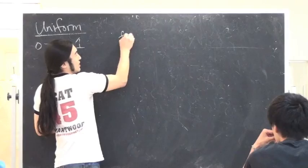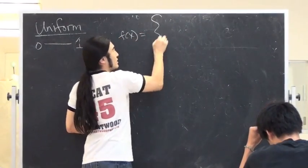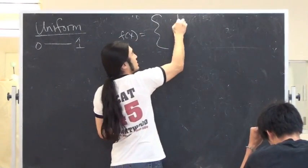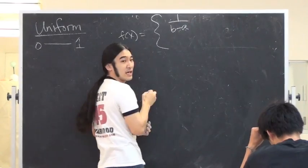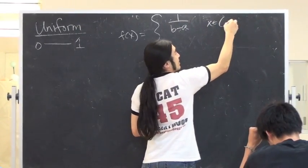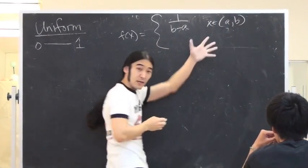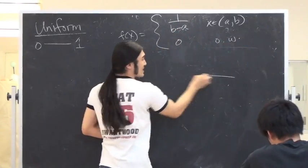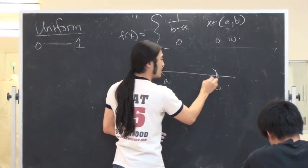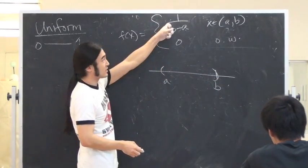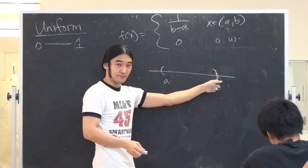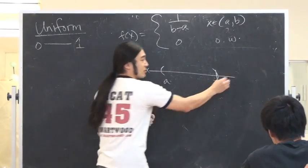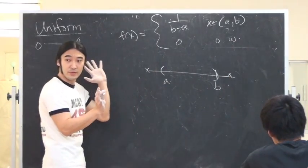The density function, you don't even really have to know this, but the density function is written like this: 1 over b minus a, for x in the interval a to b, picking numbers again, 0 otherwise. So, it just means like this. Here's your number a, here's your number b. What's the density function look like? It's 1 over the length of this guy. If you're over here, over here, it's 0.